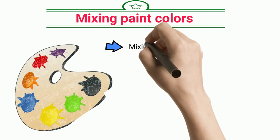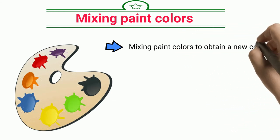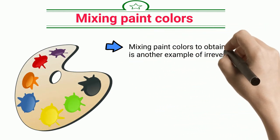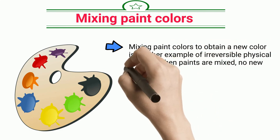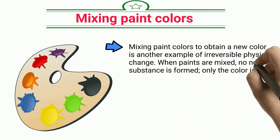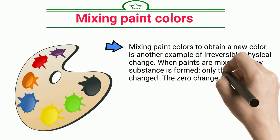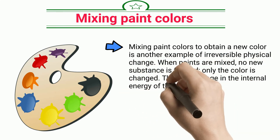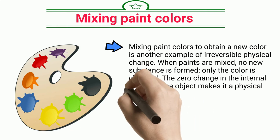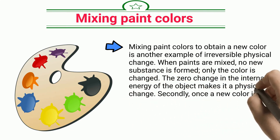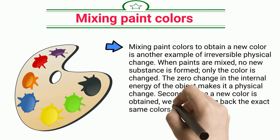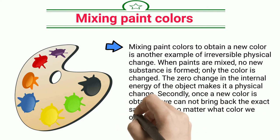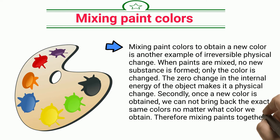Mixing Paint Colors. Mixing paint colors to obtain a new color is another example of irreversible physical change. When paints are mixed, no new substance is formed — only the color is changed. The zero change in the internal energy of the object makes it a physical change. Secondly, once a new color is obtained, we cannot bring back the exact same colors no matter what. Therefore, mixing paints together is an irreversible change.